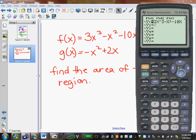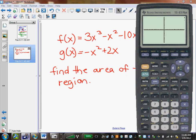Our second function is negative x squared plus 2x. Zoom six gives me a nice picture of the two.